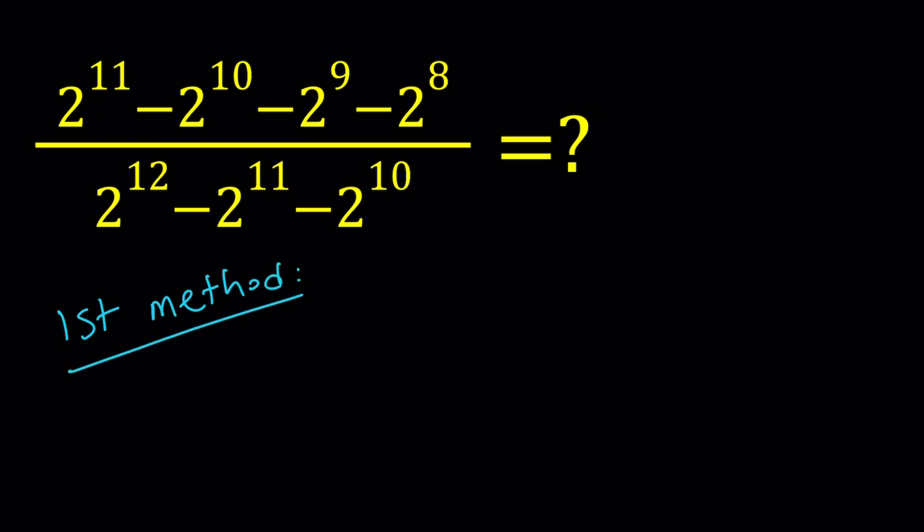So for my first method, I'm going to consider the following. 2 to the power 11 and 2 to the power 10 are consecutive powers of 2. So if I take those two together, I can actually come up with something.